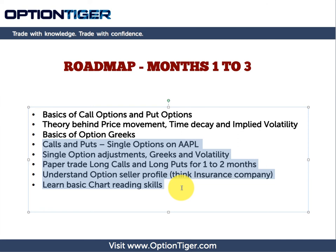For the first one to two months, just practice on this paper money account. Make sure you're understanding the theory, because if you don't understand this theory, you cannot go forward — and if you do go forward, you're going to make mistakes and lose money. So that's as far as months one to three are concerned. Let's go into the next lecture, and I'll show you what your months four to six are going to look like. Thank you.